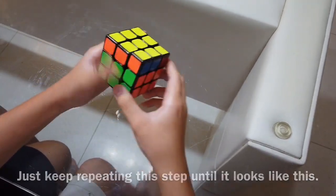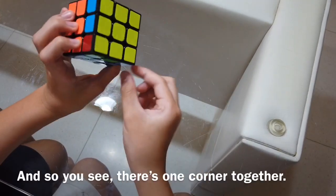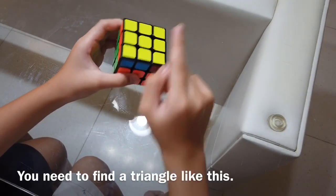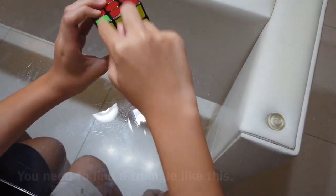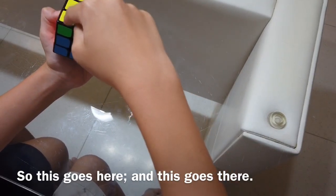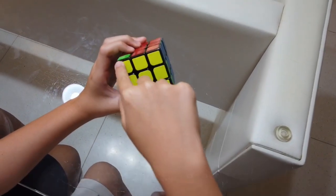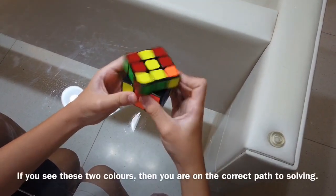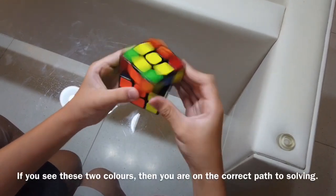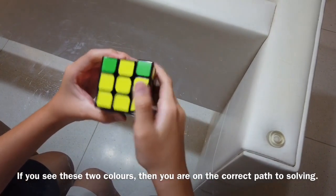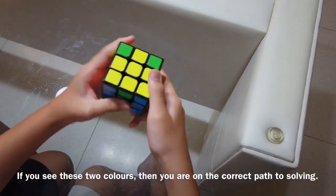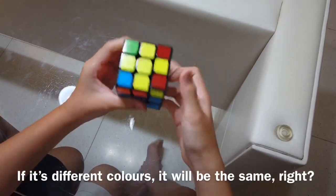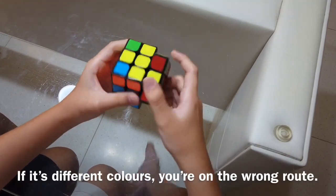Like this. So you see there's one corner together. Right? Yeah. You need to find a triangle. Like this. See this comes down here, right? This goes here. And this goes back here. If it's right, you do this way. If you see two of the same colors, it means you're on the correct way to solving it. If it's different colors, you're on the wrong route.